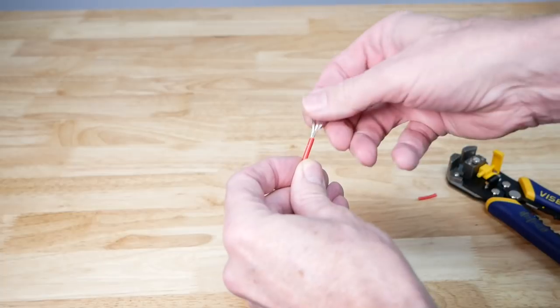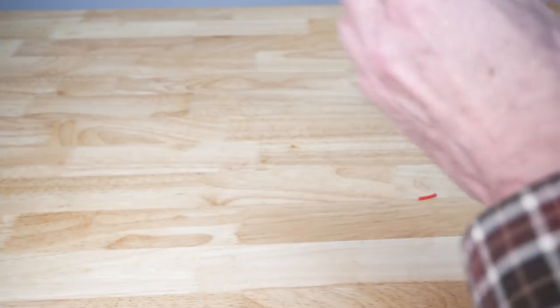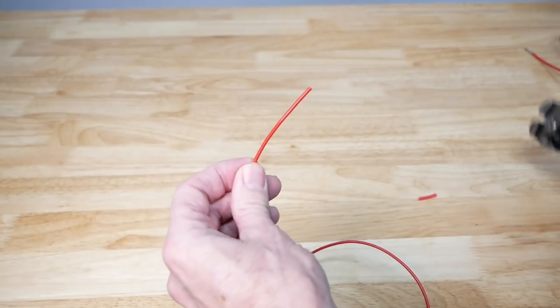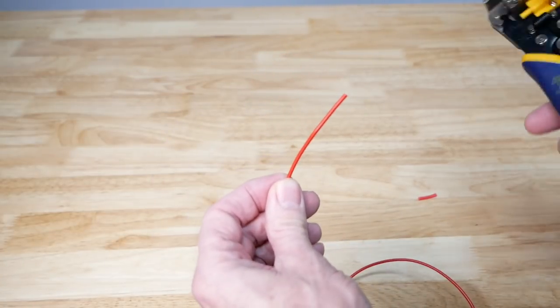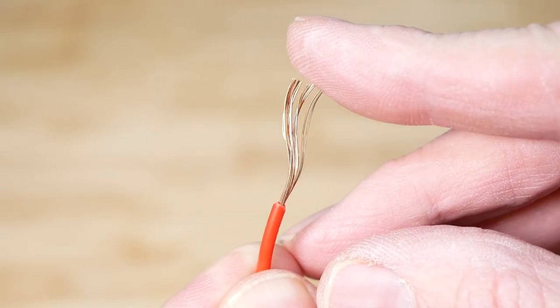Here is a 22 gauge, which is very common. You would use this on your Goldwing, no problem. It just strips it right off. And as you can see, none of the strands underneath are damaged.